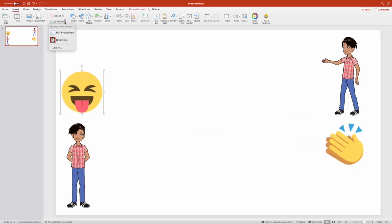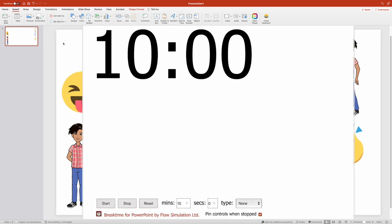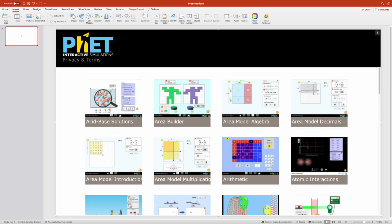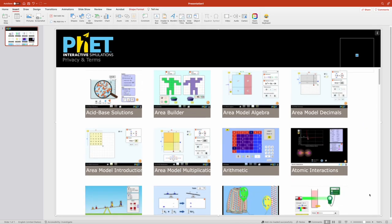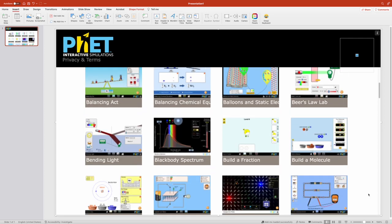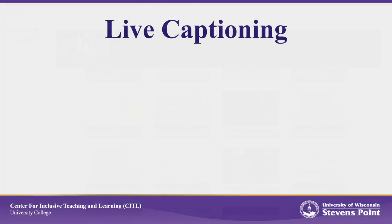To use a countdown timer, access the Break Time plugin in the My Add-ins tab of the Insert ribbon. PhET simulations are also available through the My Add-ins tab. As you can see, there are many interactive sims available through this plugin.